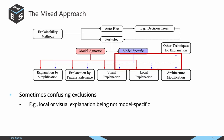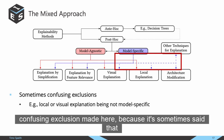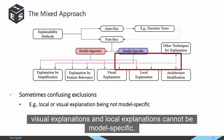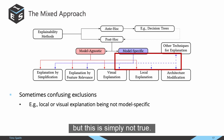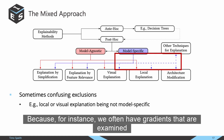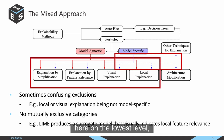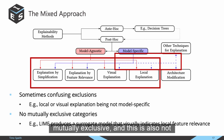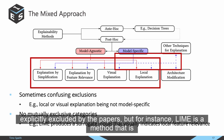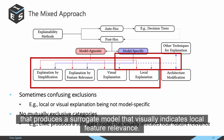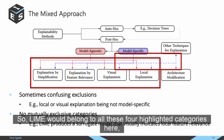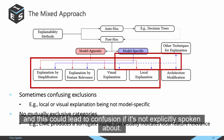For the mixed approach, there are sometimes confusing exclusions — for instance, it is claimed that visual explanations and local explanations cannot be model-specific, but this is simply not true, since gradients often deliver local explanations. Furthermore, at the lowest level the categories appear to be mutually exclusive, which is not explicitly addressed. For example, LIME produces a surrogate model that visually indicates local feature relevance — meaning LIME belongs to all four highlighted categories simultaneously — which can lead to confusion if not explicitly discussed.